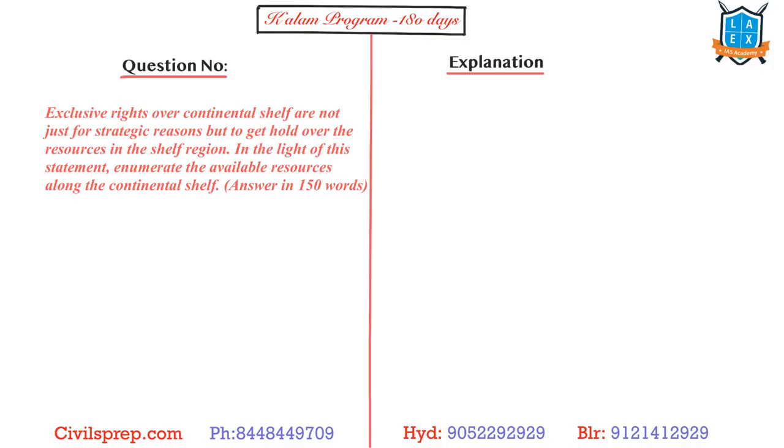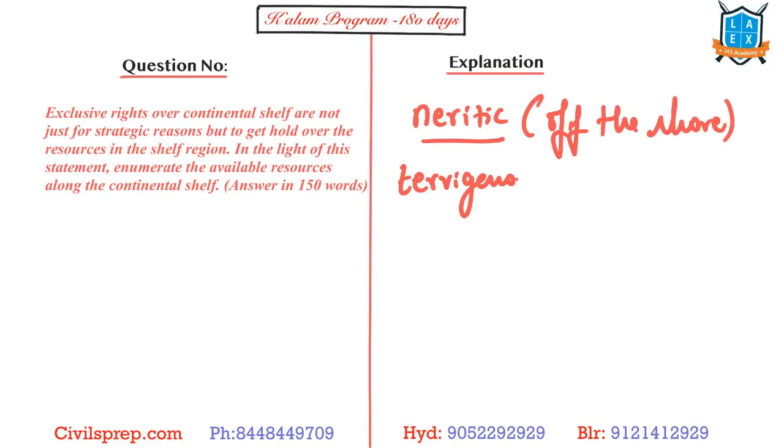These are also your neritic resources, that is, they are offshore resources. And these resources, you have to write what all are you know - that you have terrigenous resources that is coming from the earth, where you will have boulders, granules.